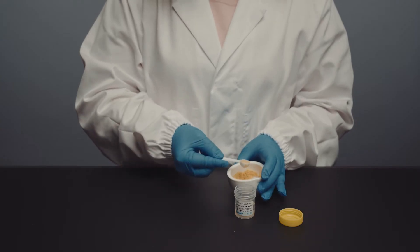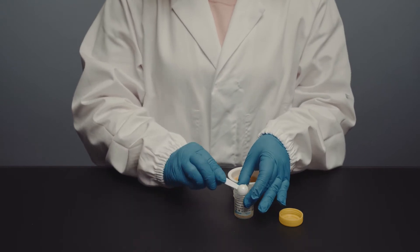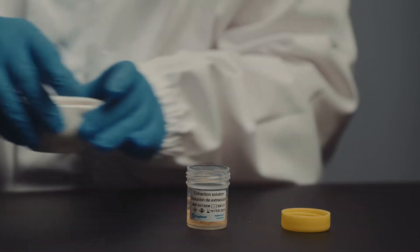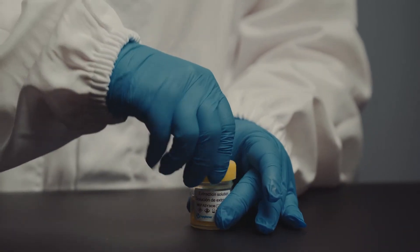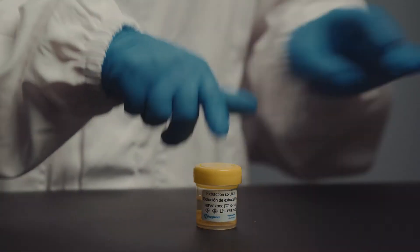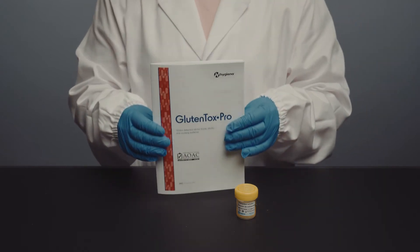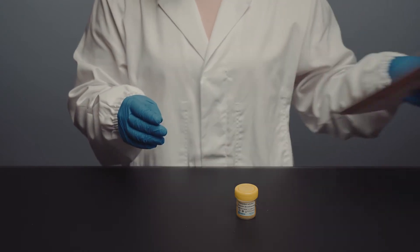Step three, add two level scoops of the cookie crumbs to the extraction buffer. Note that the number of scoops of a sample that need to be added will depend on the type of sample. An easy to interpret guide is supplied in the kit instructional manual.